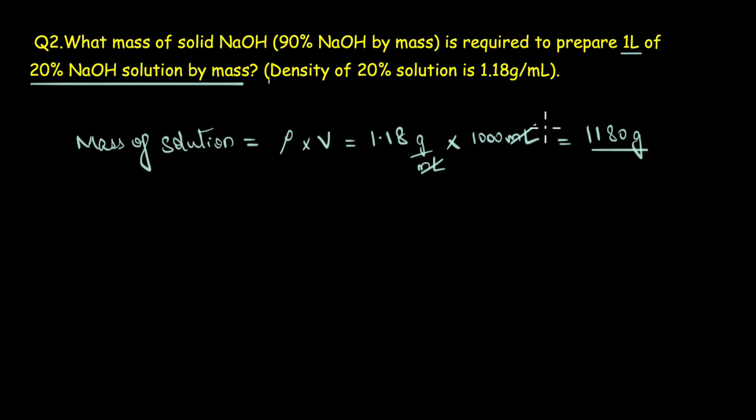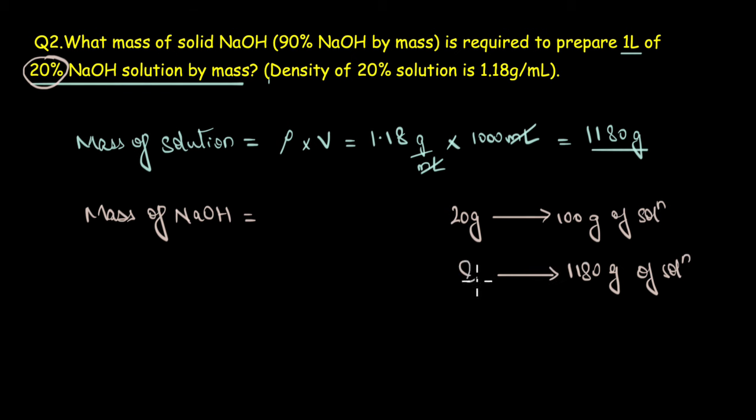Correct. Now if this is the mass of the solution, then how much is the amount of solute present, or what is the mass of NaOH in this amount of solution? Well that's pretty straightforward because it is said that it is a 20% NaOH solution, right? Which means 20 grams of solute is present in 100 grams of solution. Now what we have here, the total mass of solution is 1180 grams. So 1180 grams of solution contains how much solute? Well, on cross multiplying we get the final answer as 236 grams of NaOH.